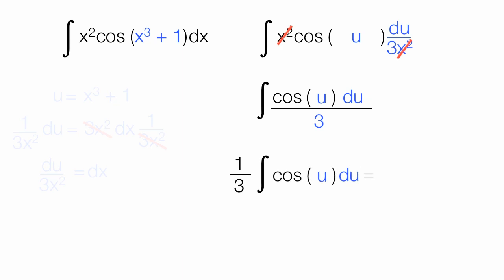This is equal to 1 third times the integral of cosine u, which is sine u, plus some constant. Now I have 1 third, and I'll replace the u with x-cubed plus 1,